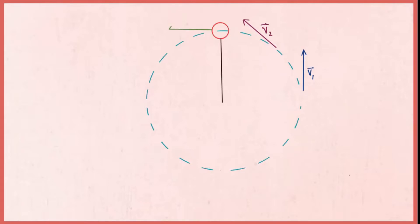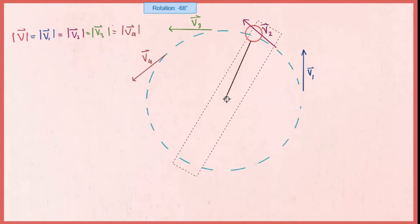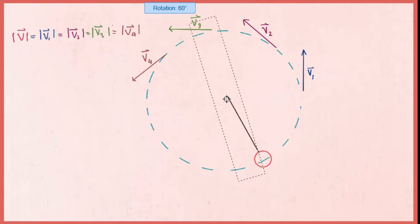let it be v3 and v4. Let's say that the magnitude of velocity remains constant, which means that the magnitude of velocity equals magnitude of velocity vector v1, which equals magnitude of the velocity v2, which equals v3 and v4.